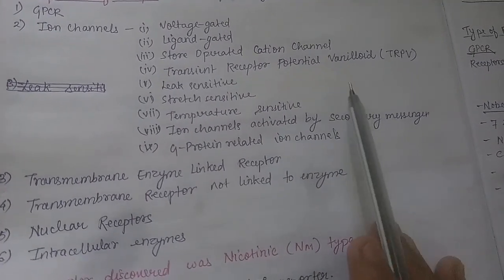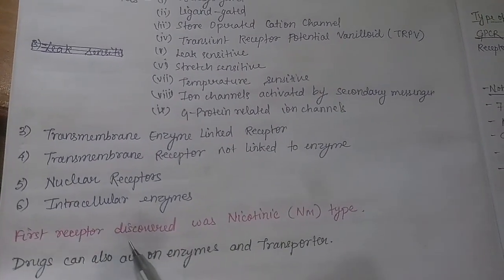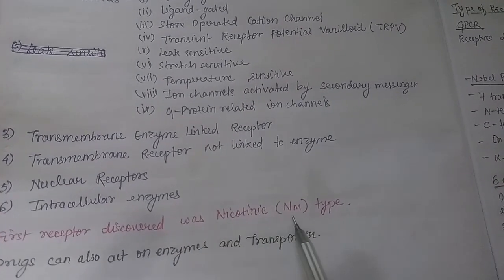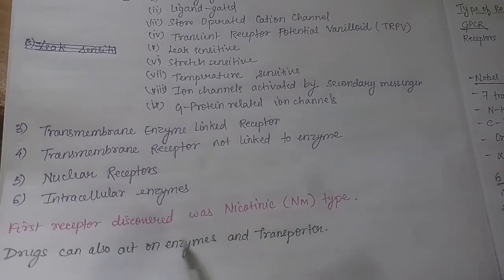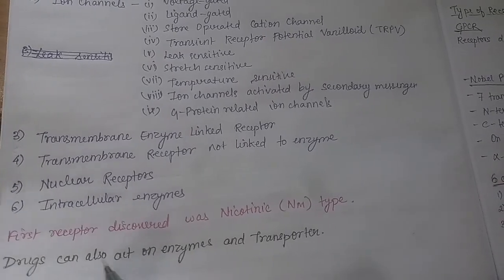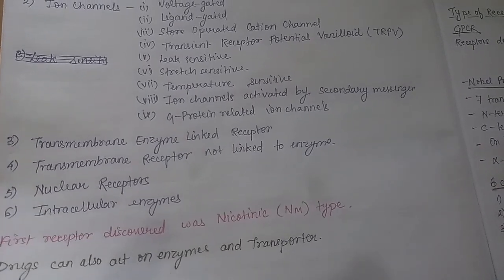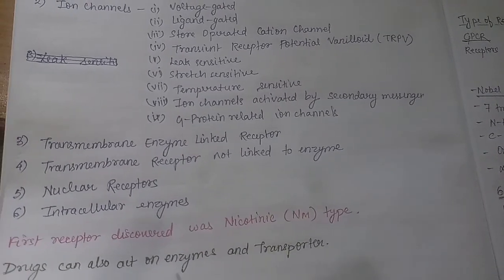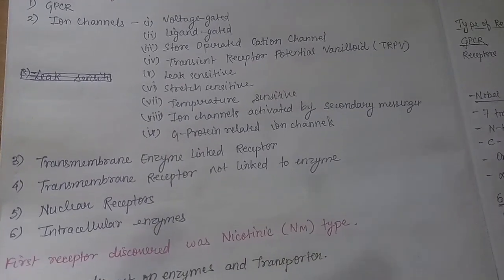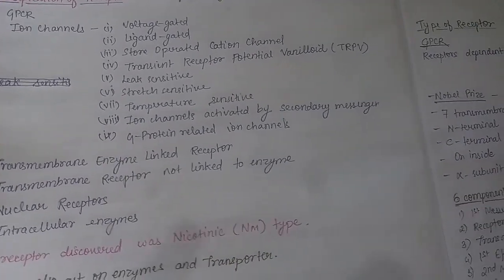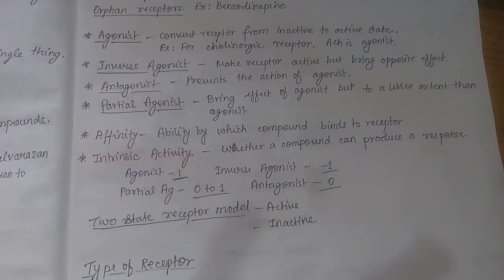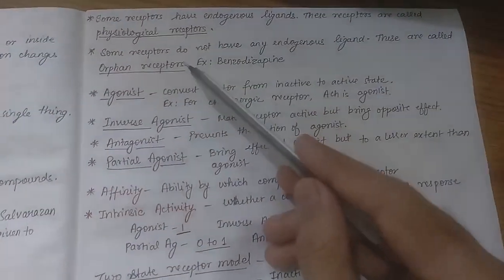The first receptor discovered was the nicotinic receptor, that is the NM type. One important point is that drugs also act on certain enzymes and transporters, but they are usually not categorized as receptors.